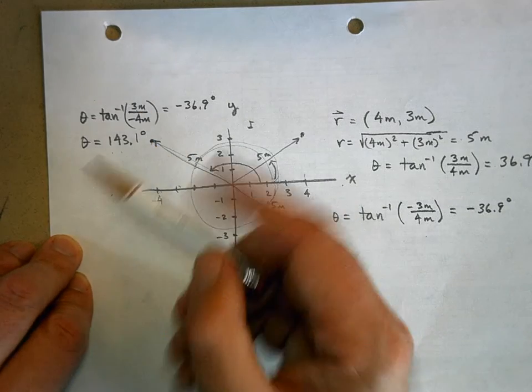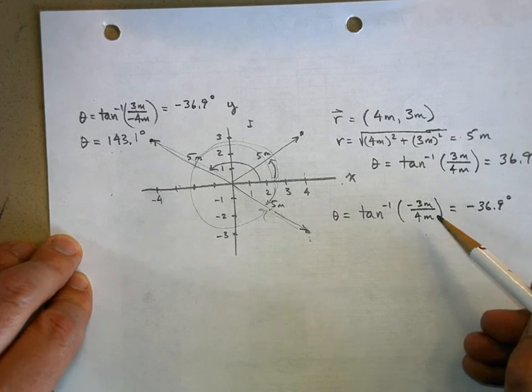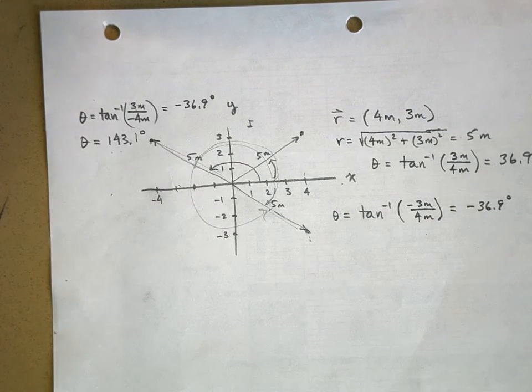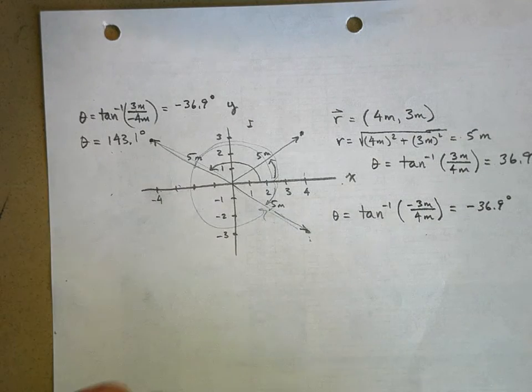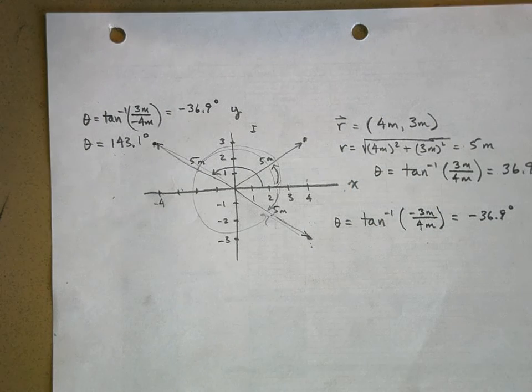3 divided by negative 4 is negative 0.75. This is negative 0.75 down here. Your calculator is not smart enough to know the difference between the fourth quadrant and the second quadrant. You have to be smarter than your calculator.